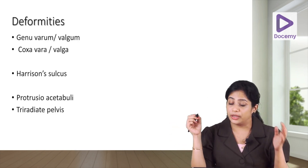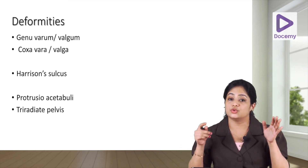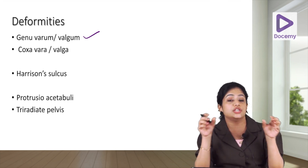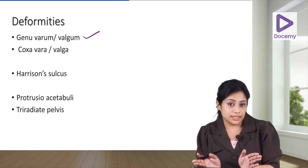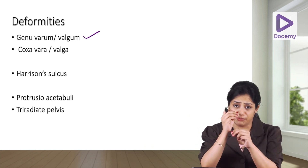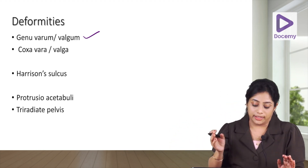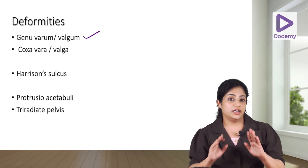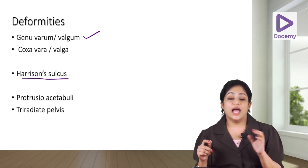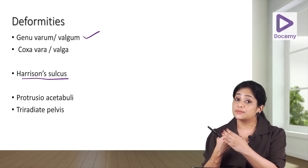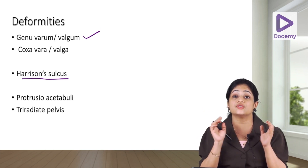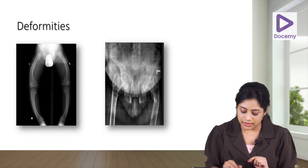Continued vitamin D deficiency leads to deformities due to weight bearing on soft bones. This can result in genu varum — bowing at the knee joint — or genu valgum — knock knee. At the hip it can result in coxa vara or coxa valga, referring to changes in the angle between the femoral neck and shaft. There will also be Harrison's sulcus — indrawing at the lower border of the ribs due to diaphragm attachment. The pelvis is softened, the acetabulum protrudes into the pelvis — protrusio acetabuli — and together with spinal protrusion this creates a tri-radiate pelvis.